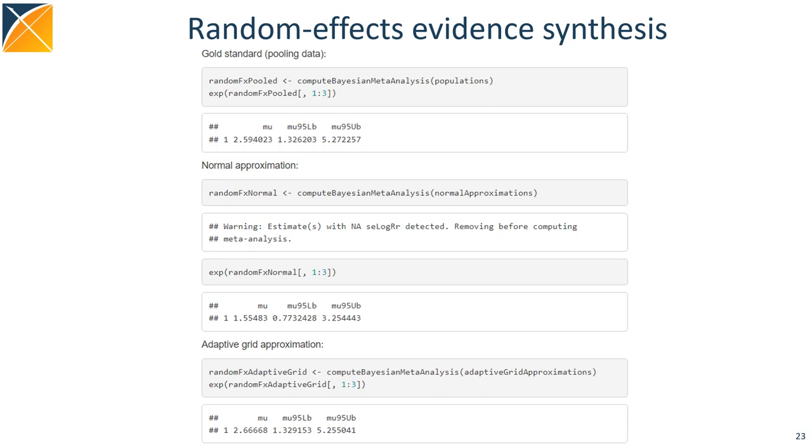Probably more realistic would be a random effect model. Again, we pool the data to obtain a gold standard estimate. Again, the normal approximation is quite far from this gold standard. The adaptive grid approximation, on the other hand, is again close to the gold standard.